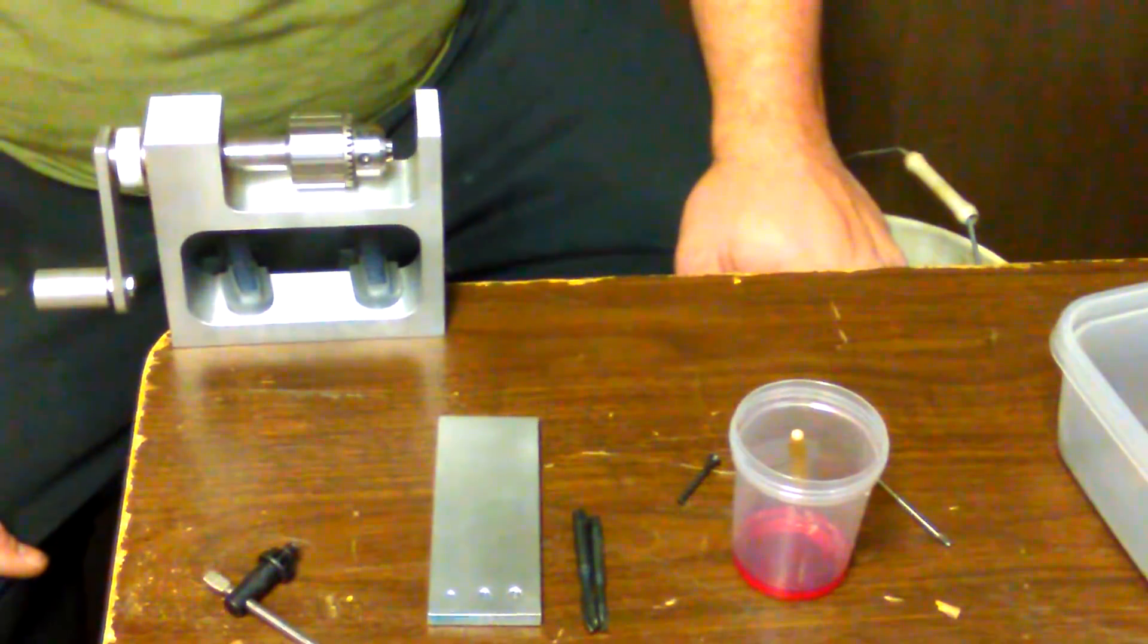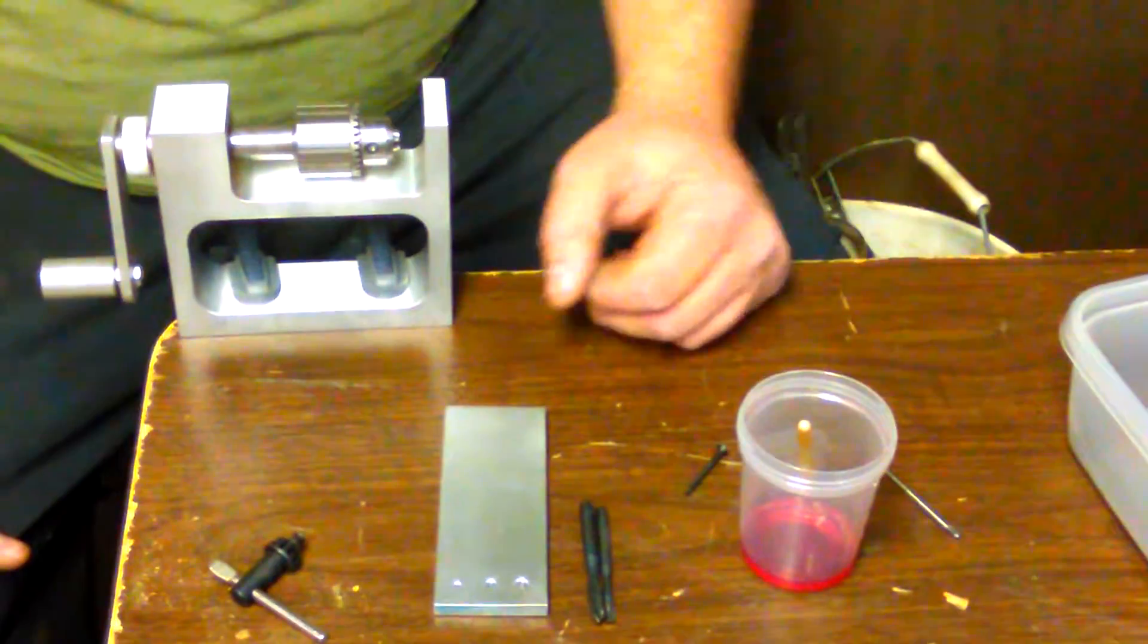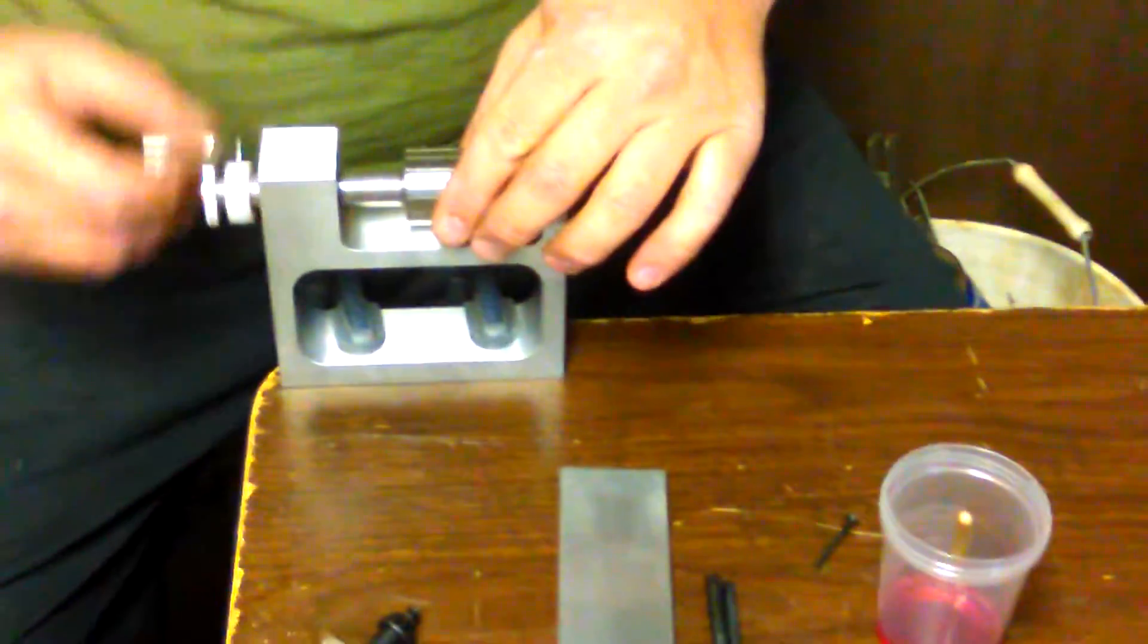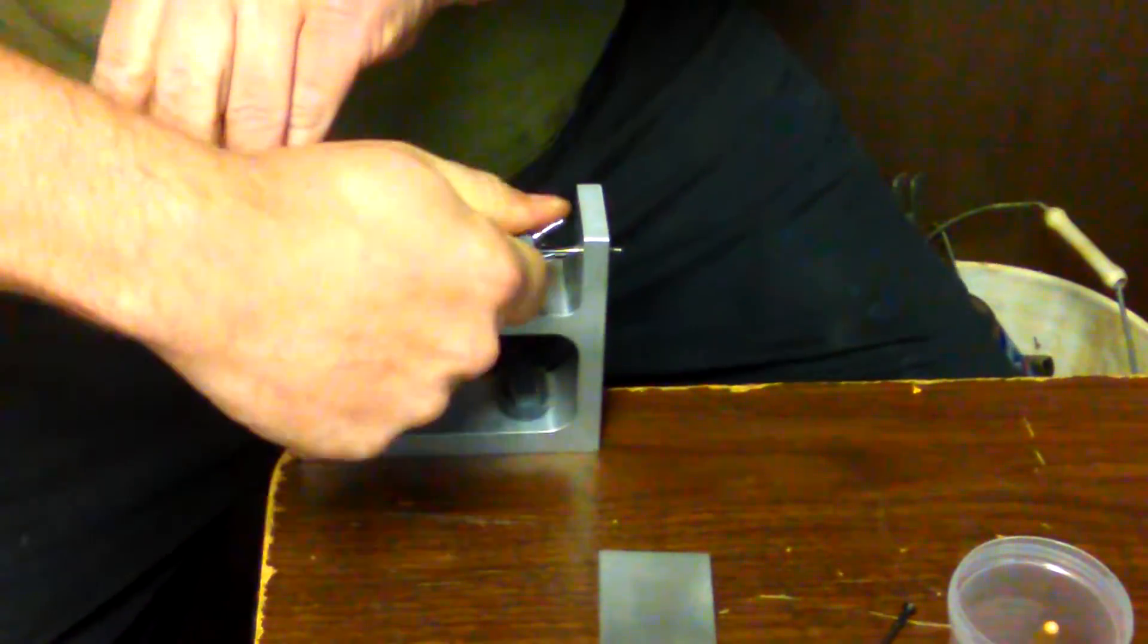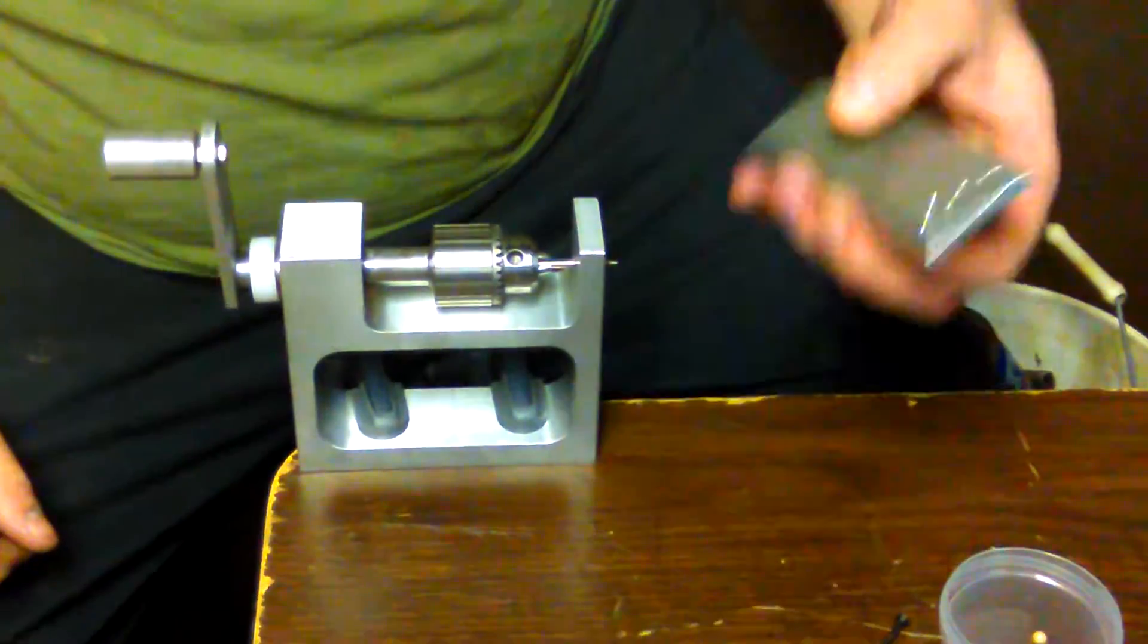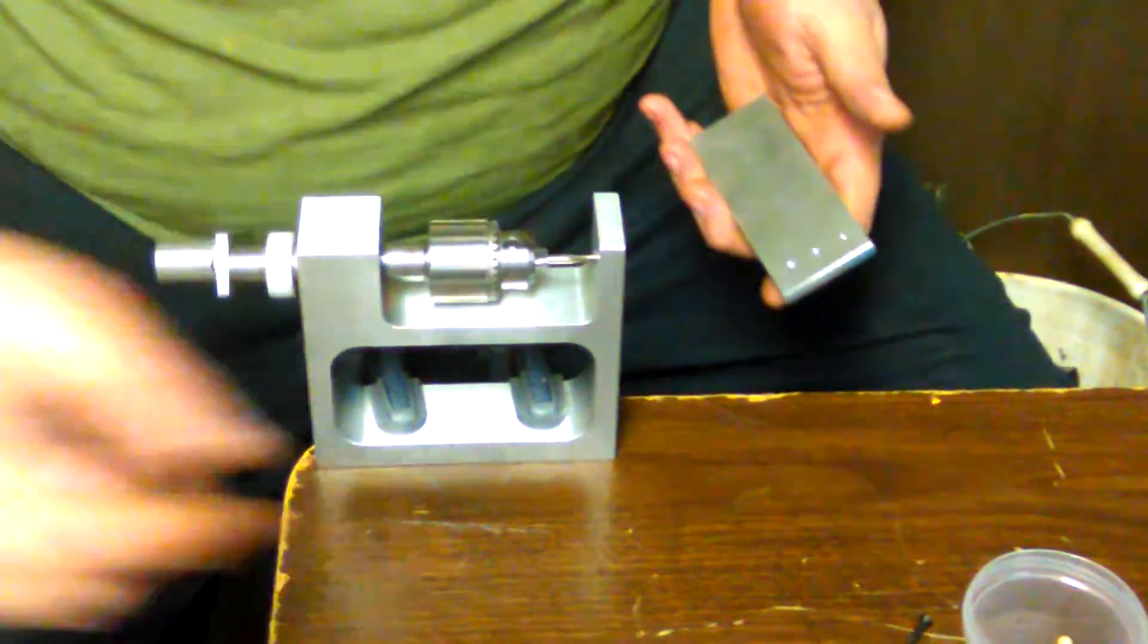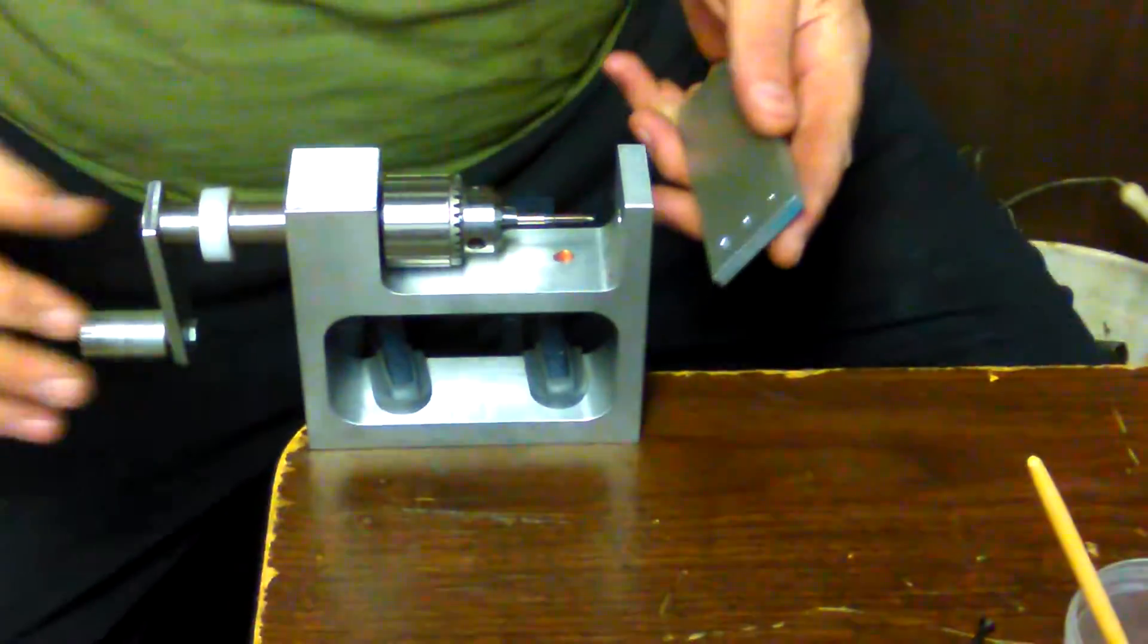So we'll start out with 4-40. Load the tap into the front, tighten it up by hand, comes with the chuck key just like you'd want on a drill. This is just a piece of quarter-inch 6061, same thing that this is made out of. The lube goes along the way.